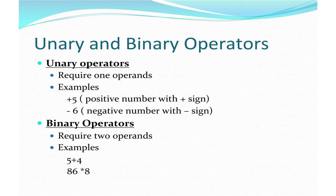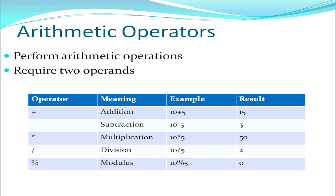Arithmetic operators, as the name says, perform various arithmetic operations and are binary operators requiring two operands. The table shows the five arithmetic operators supported by C++: plus for addition, minus for subtraction, star (*) for multiplication, slash (/) for division, and the percent symbol (%) for modulus. The new thing you may be coming across is the percent sign or modulus.